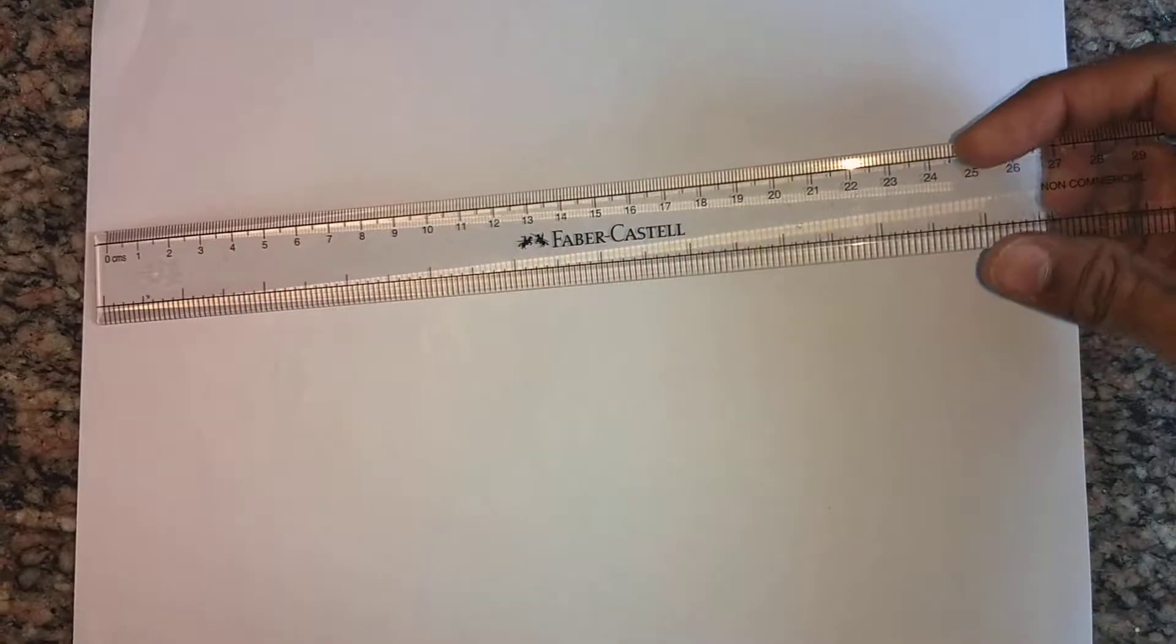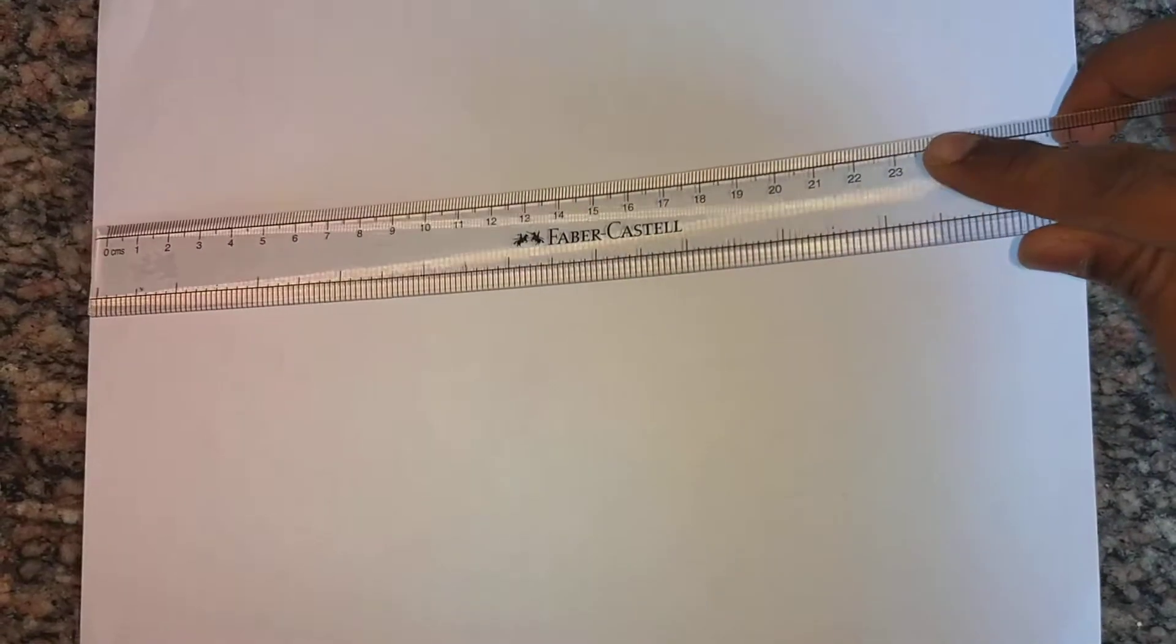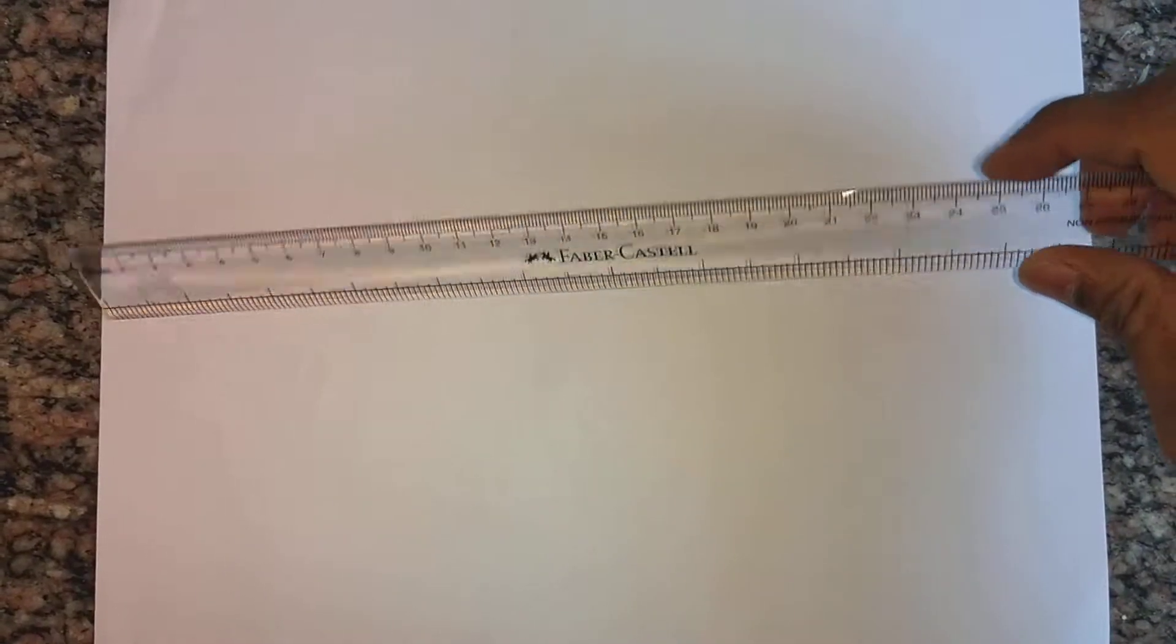Have you ever wondered why is it so easy to bend this ruler in one orientation, but if you just try to bend it in this orientation, it's almost difficult?